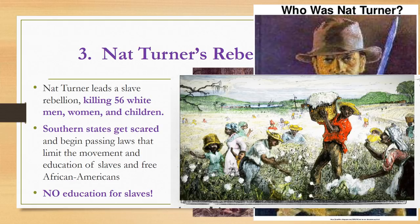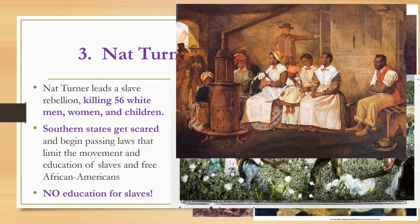White slave masters got scared when they heard the news that slaves had risen up against their masters, stolen guns and weapons, and stormed into their homes to kill their families. The southern states began passing laws that limited the movement and education of slaves and free African Americans to prevent slaves from communicating with one another and potentially conspiring to do something similar again. Rules got even tougher for slaves and they were prevented from learning to read and to write and to have an education.